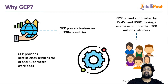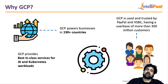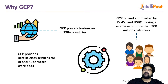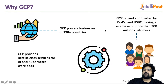GCP has lesser revenue than its counterparts mainly because it launched later — around 2012 — compared to AWS which came in around 2006 and Azure around 2010. So GCP came in the latest and it's taking time for adoption. However, well-known companies like PayPal and HSBC are hosted on Google Cloud Platform.